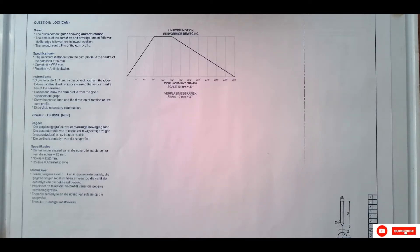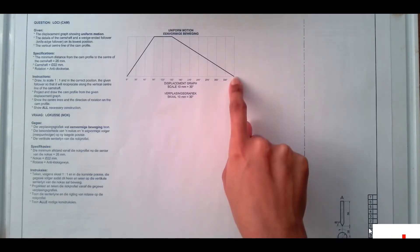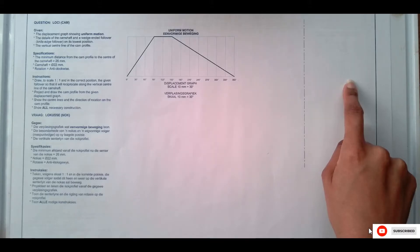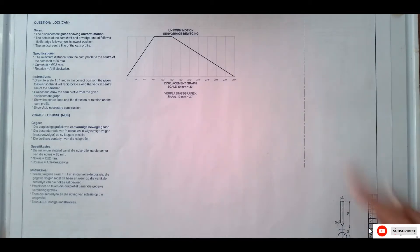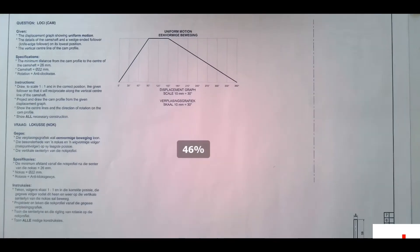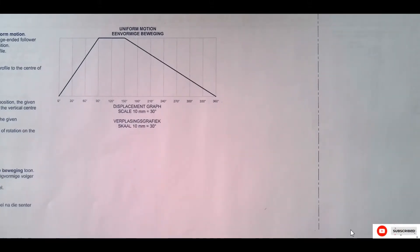When you answer this question, you must always ensure that you read the instructions. What I'm going to do is quickly copy this. The end point of the wedge — the sharp point of the wedge — is always in line with the bottom part of the displacement graph, so I'm going to assume that you have the question in front of you so that you can follow along.